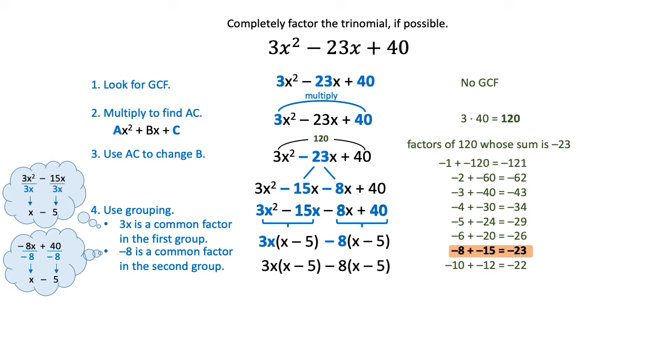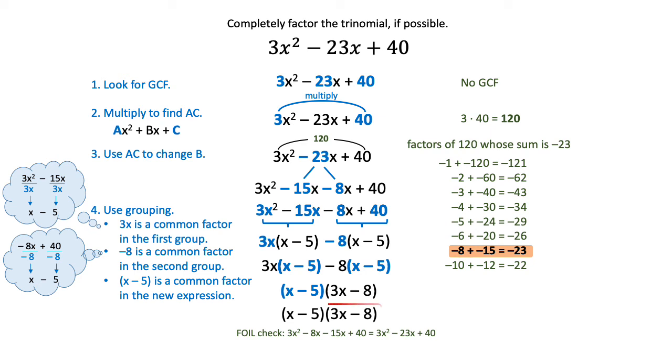Then I take that expression. Now I've got two big terms, and the quantity x minus 5 is a common factor in this expression. So now all I have to do is pull that out, and that leaves me with parentheses 3x minus 8. And that happens to be the solution to the factoring. When you factor the trinomial, your answer is (x - 5)(3x - 8). And you can always check these with FOIL. Notice that your FOIL does check. When you multiply it together, you get the original expression.